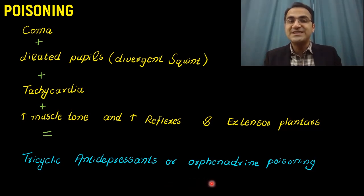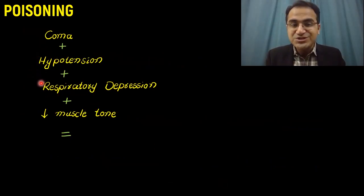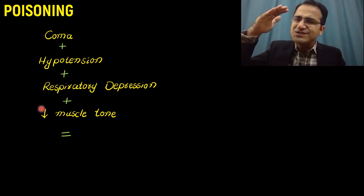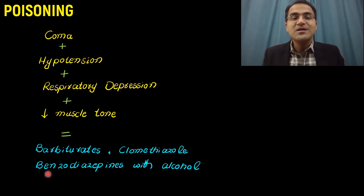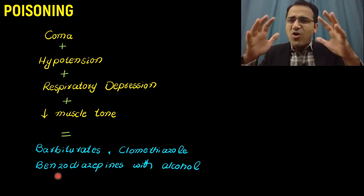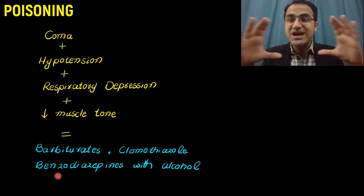Orphenadrine, a skeletal muscle relaxant, can present similarly in overdose. If you see coma with hypotension, respiratory depression, and decreased muscle tone, it means there is central nervous system depression, caused by barbiturates, clomethiazole, or benzodiazepines — especially when benzodiazepines are taken with alcohol.